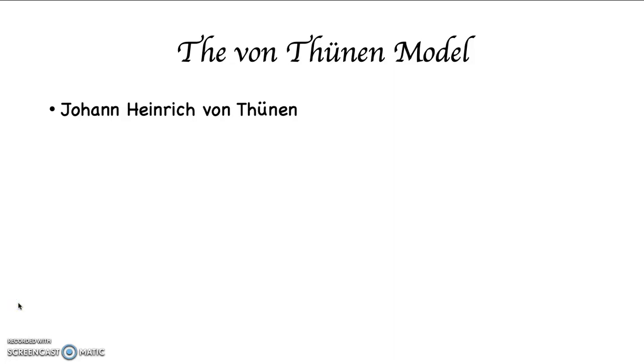The von Thünen model was created by a man named Johann Heinrich von Thünen. He was a farmer and an economist living in northern Germany in the early 19th century. That's the early 1800s.